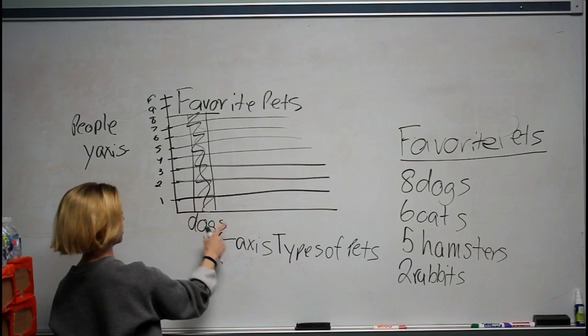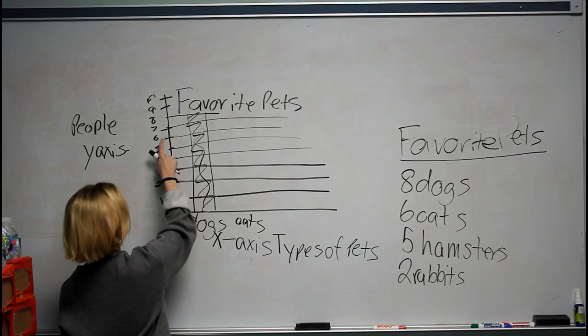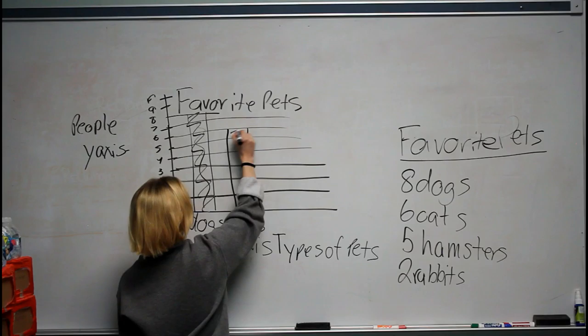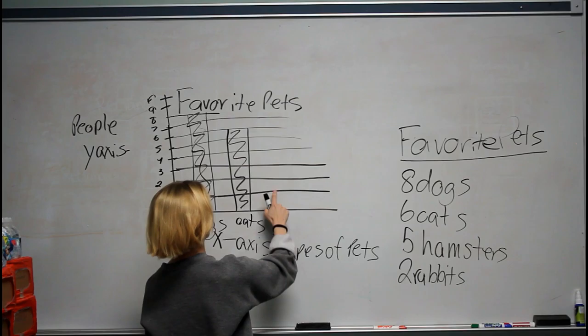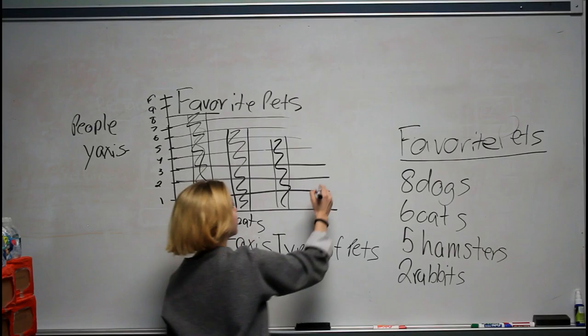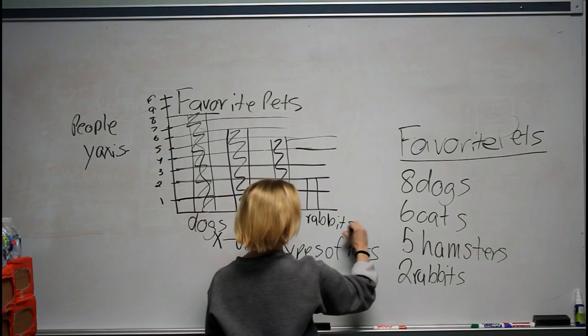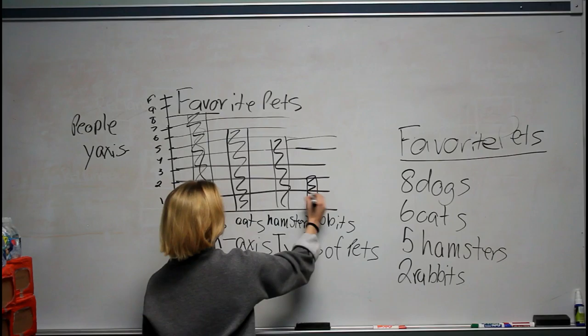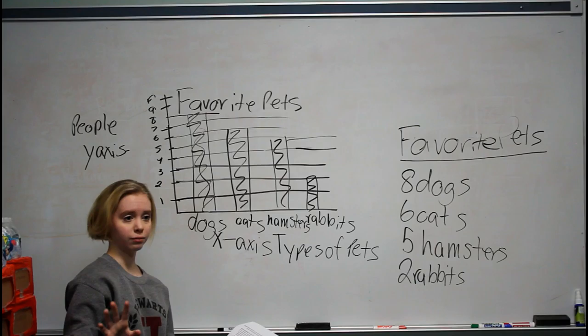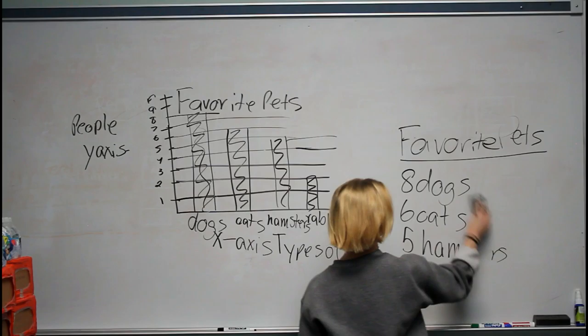For our next bar, we need to make 6 for cats. We count up to 6, go directly over, and make two bars, then color it in. The next one is hamsters, so we count to 5, draw two bars, and color it in. Our final one is rabbits — we only count to 2. After you have all your bars colored in and each bar labeled, you're done. That would be your entire bar graph.